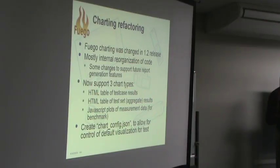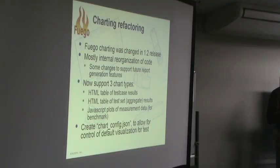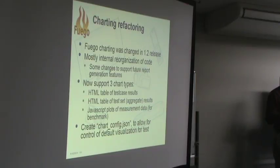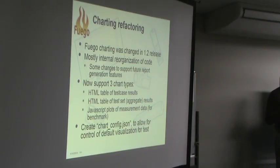We did some work on charting — it was reorganized and refactored in the 1.2 release. We now support three chart types: two HTML tables for individual and aggregate test case results, and JavaScript plots of measurement data. Previously we really only had the JavaScript plots. We added a new chart-config file with the intent of putting more configuration capability into it so users can control visualization for a test — for instance, choosing to display interrupt latency specifically when running cyclic test.